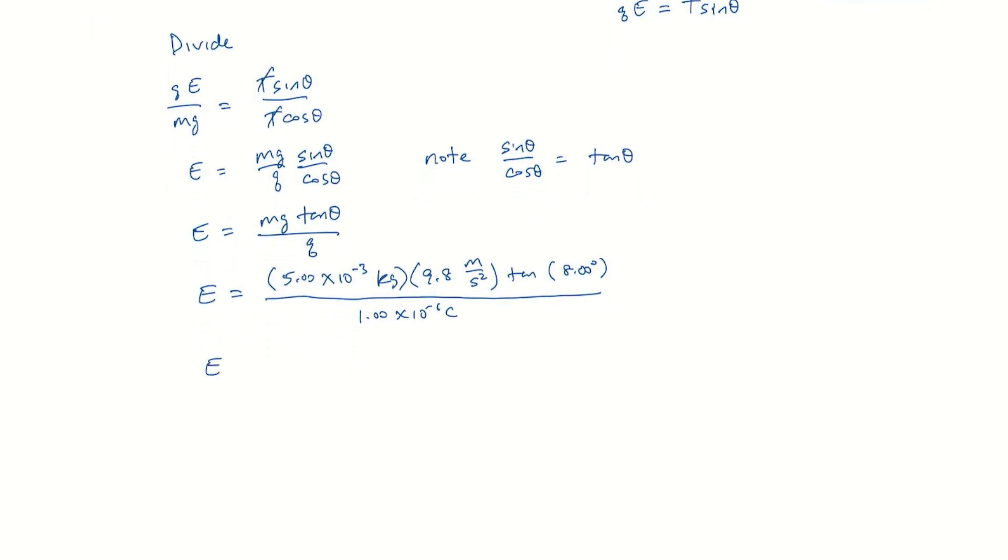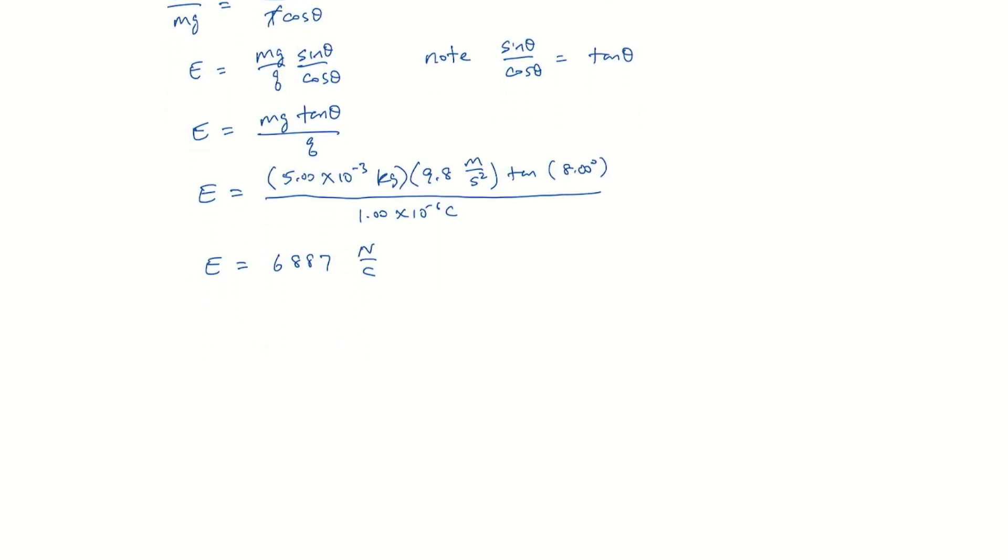I did this calculation and I get 6,887 newtons per coulomb. And so we can say e is 6.89 times 10 cubed newtons per coulomb.